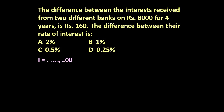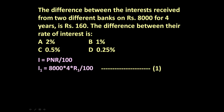To solve this type of problem, first let us write the formula for interest: I = P × N × R / 100, where I is the interest received, P is the principal, N is the number of years, and R is the rate. For the first bank, I1 = 8000 × 4 × R1 / 100. This becomes equation number one.